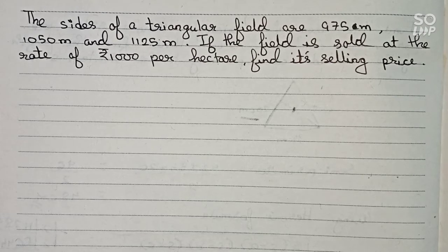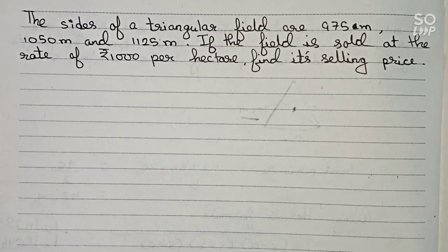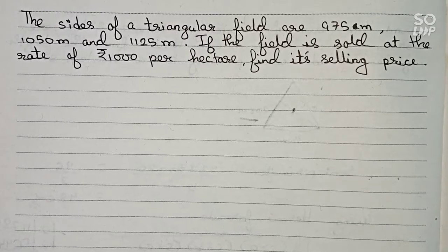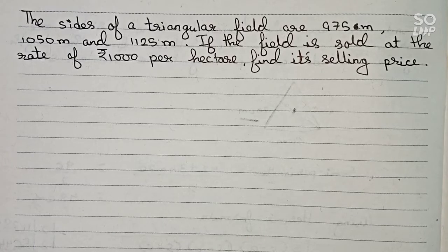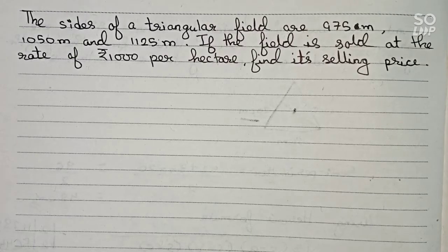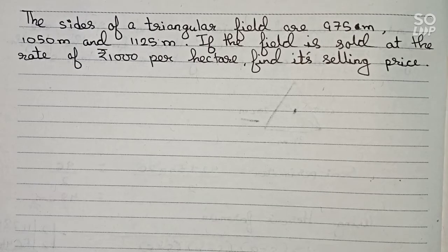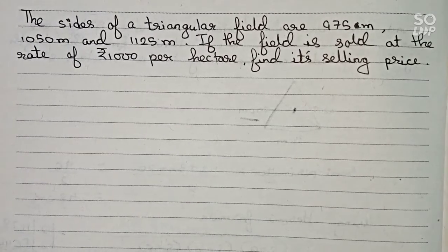Hello guys, welcome to this video. In this video our question is: the sides of a triangular field are 975 meter, 1050 meter and 1125 meter. If the field is sold at a rate of 1000 rupees per hectare, find its selling price. So this is our question, now let's solve this. First we will find out the area of the field.